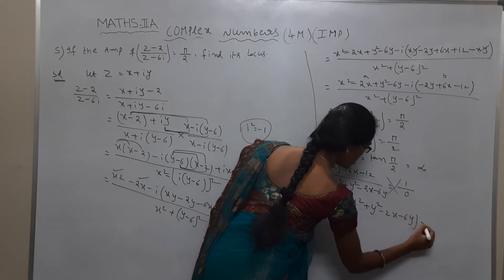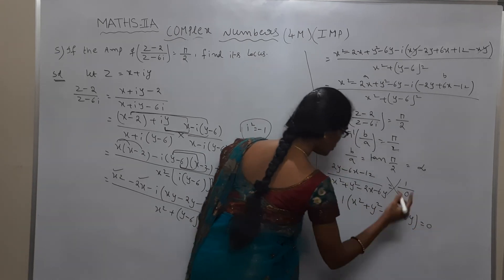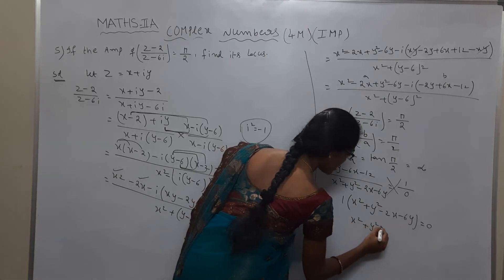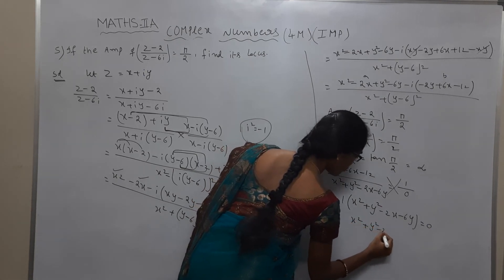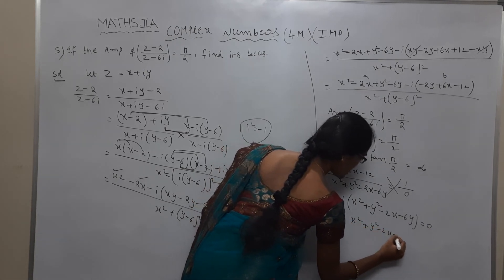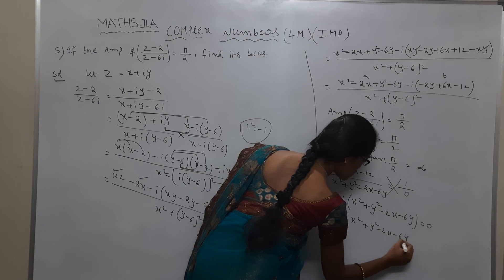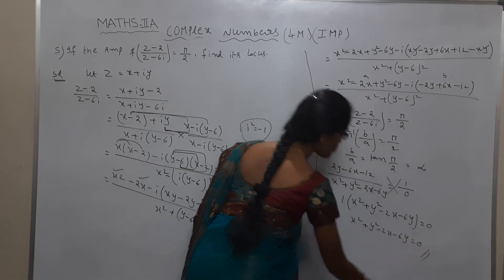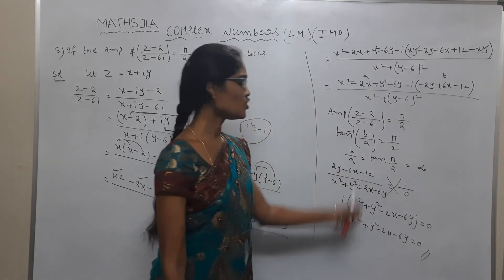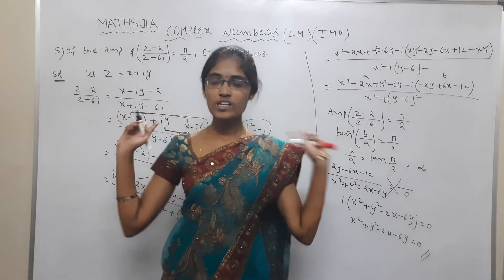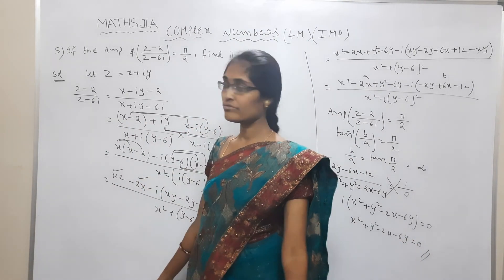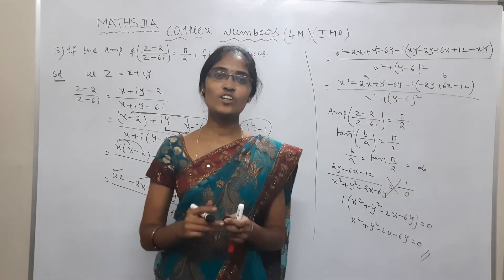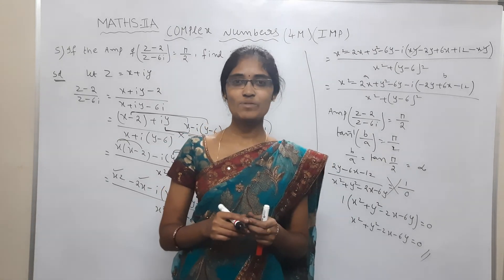So we get x squared plus y squared minus 2x minus 6y equal to 0. Therefore, the locus of p is x squared plus y squared minus 2x minus 6y equals 0. This model is very very important for 4 marks. If you like the video, please like, share, and subscribe.